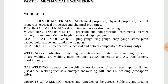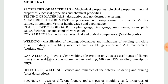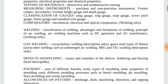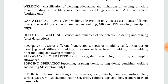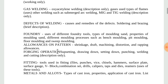Welding topics contain classification of welding, advantages and limitations of welding, types of welding including gas welding, and defects of welding. The next topic is foundry - use of different foundry tools, types of moldings and their properties.